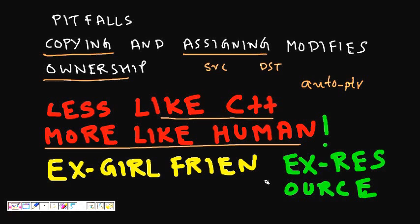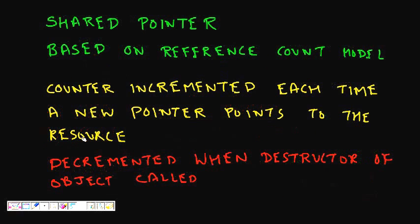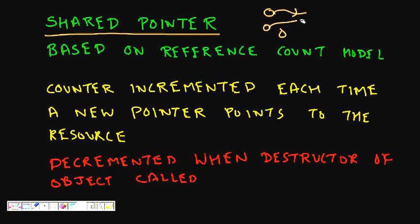That's the problem with auto pointer. When you're coding, resources need to be shareable. So we have shared pointer, which is based on the reference count model. With shared pointer, multiple pointers can all point to the same memory location — that is the key benefit.